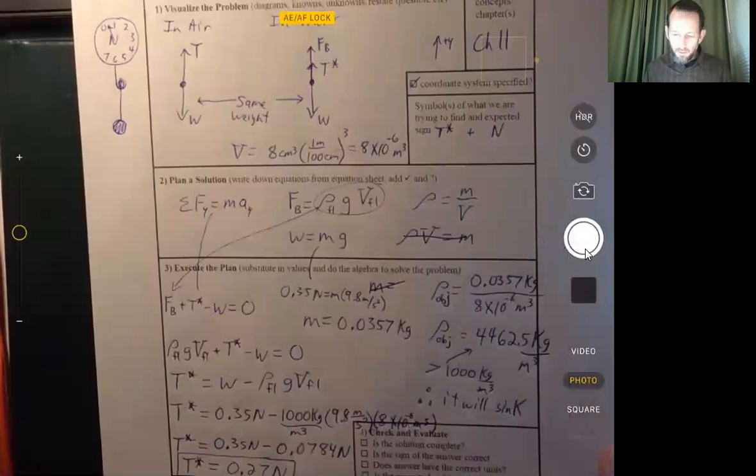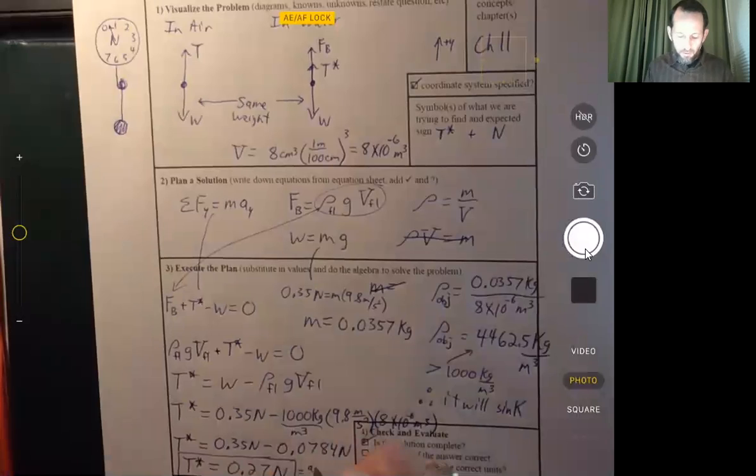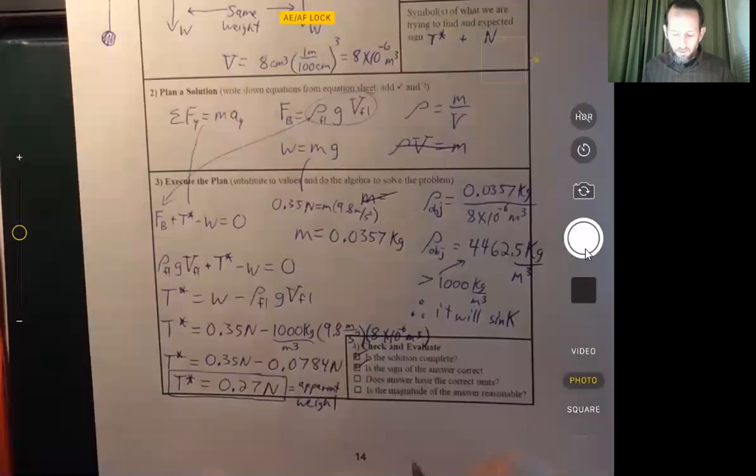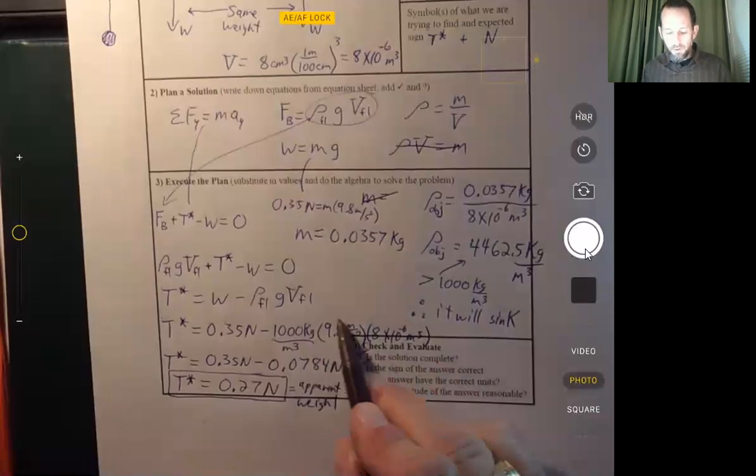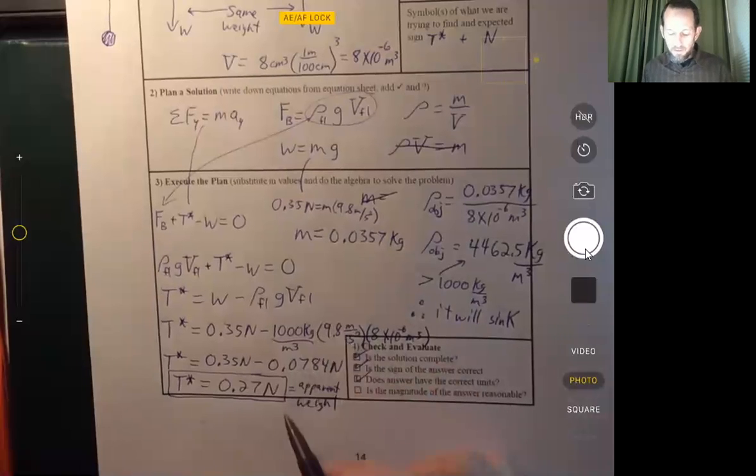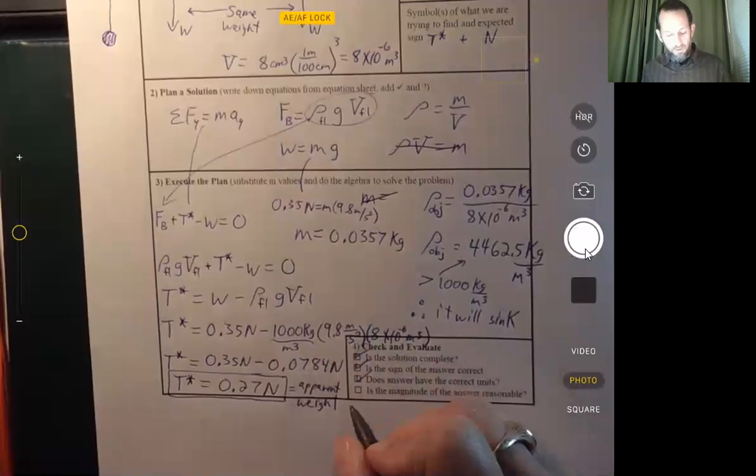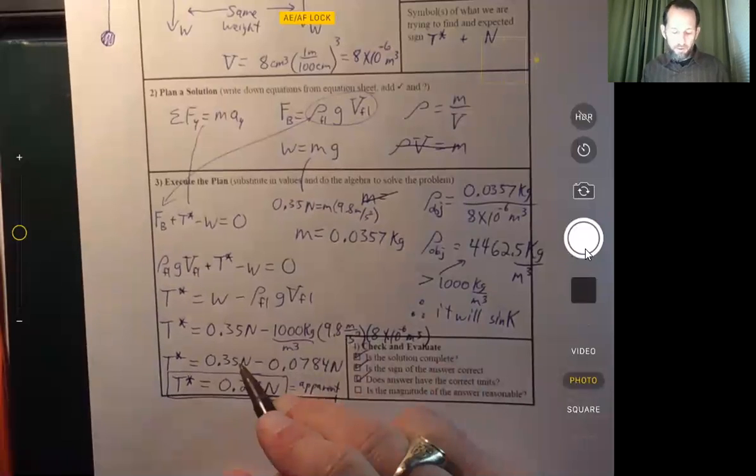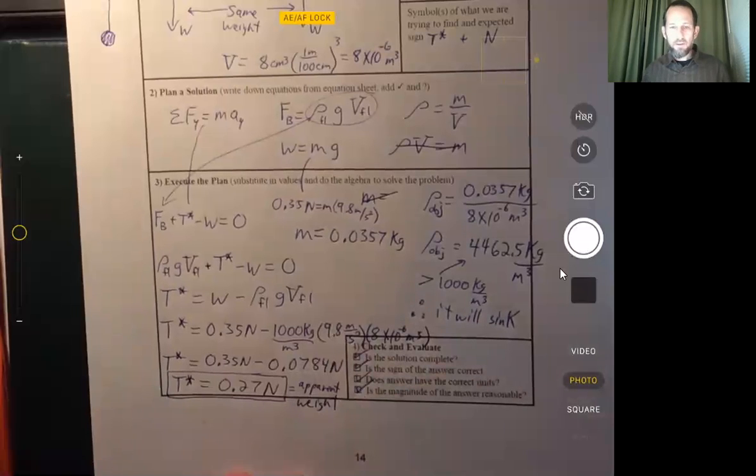Is our solution complete? It only asked us for one thing, which was the apparent weight. We can make a note. That is the apparent weight. We also put a box around it to indicate that that was our final answer. The sign did come out to be positive. If we look back at all our units here, this does give units of newtons. And then newtons minus newtons is newtons. Is the magnitude of the answer reasonable? Well, the only thing we can really figure out that it should be is it should be a value less than 0.35. It's not going to weigh more when we put it into water. So it's less than that. And it's not a negative value. So the magnitude does make sense. That's all there is to that problem. Bye-bye.